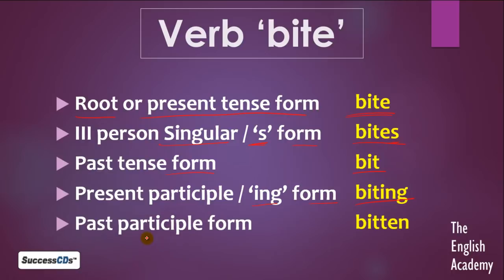Next hai past participle form. Jab hum kahenge ke 'usne pehle kaata hai', toh hum English mein bitten use karenge. Bite ka ban jayega bitten. So the past participle form of bite is bitten.